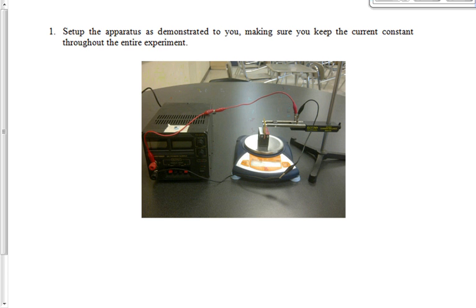Part 2, same apparatus, but this time we're keeping the current constant, not the length of the wire constant. The constant current should be somewhere around 1 amp. If you can't get exactly 1 by fiddling with it, that's okay. 0.98 is fine. 1.05 is fine. It doesn't really matter what the value is as long as it's a constant value through this part of the experiment.